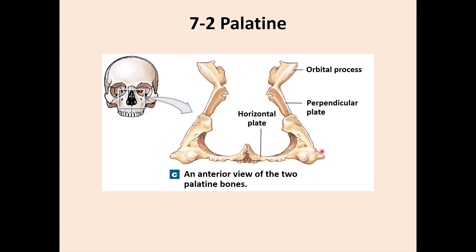The palatine bone does not have a lot of features. It has the horizontal plate, which is part of the hard palate and part of the wall of the nasal cavity. This is the part of the hard palate. Here is the orbital process, which forms a small part of the orbital cavity — a very small part.